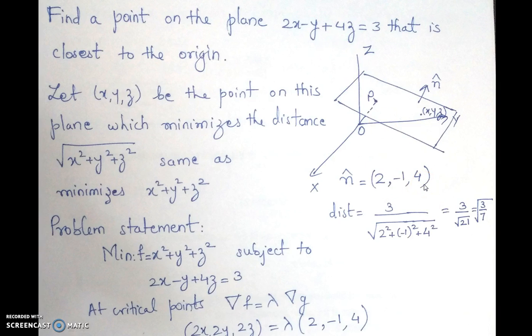And we all know from the 3D geometry that the distance of this particular plane from origin, that is the shortest distance, the perpendicular distance, is given by 3 over square root of 2 squared plus minus 1 squared plus 4 squared. That gives you 3 by root 21, which is 3 over root 21. So this is the answer that is expected.